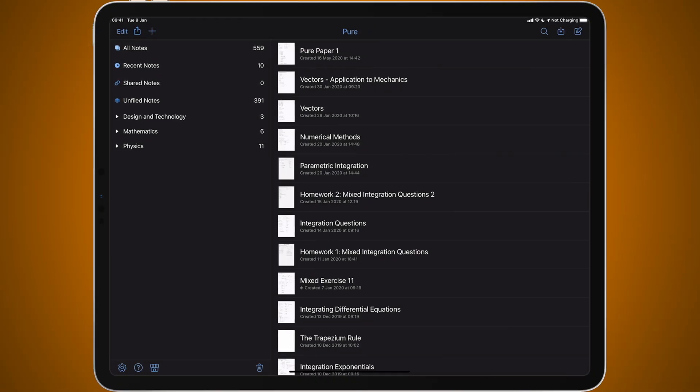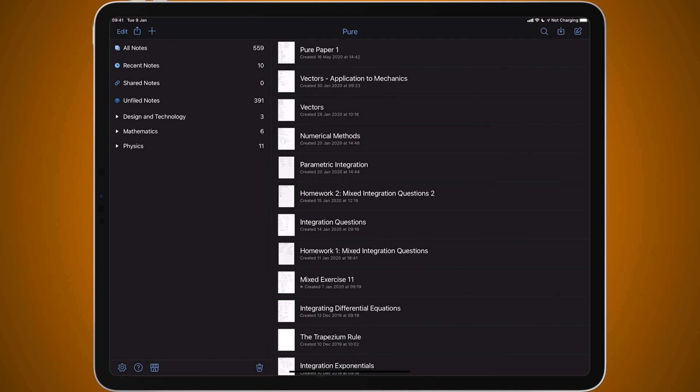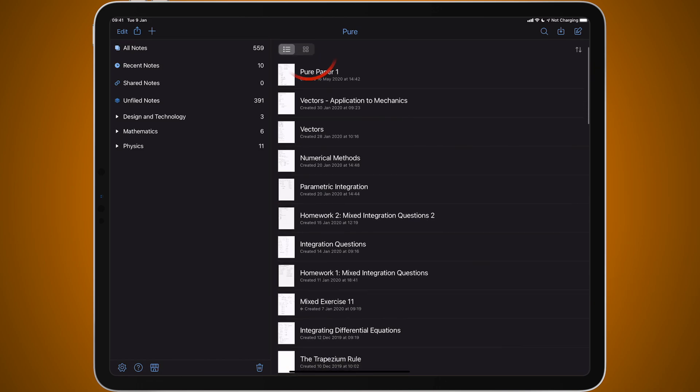As you can see we've got by default the list view which is what we've always had, but now if you pull down on the list of your notes you'll see we have an option at the top which is a grid view.